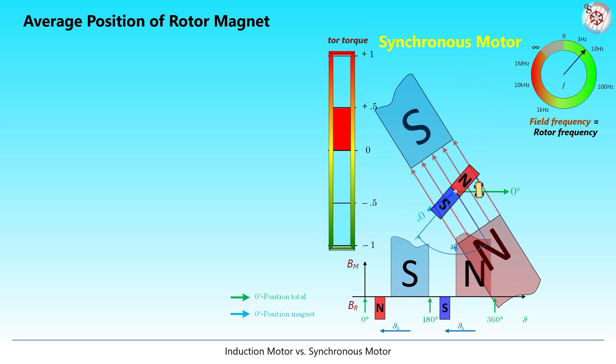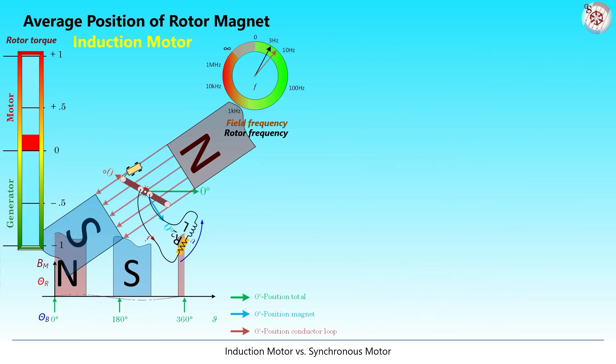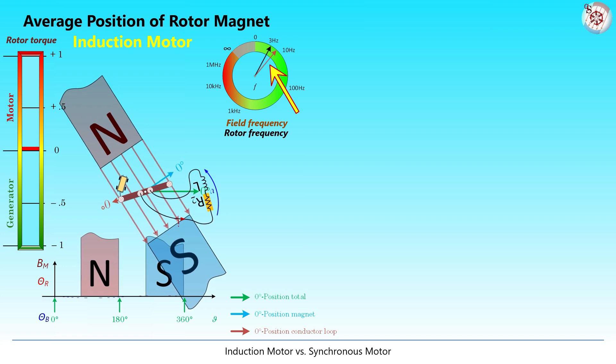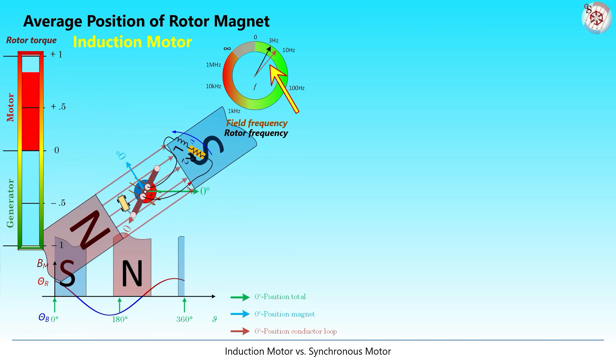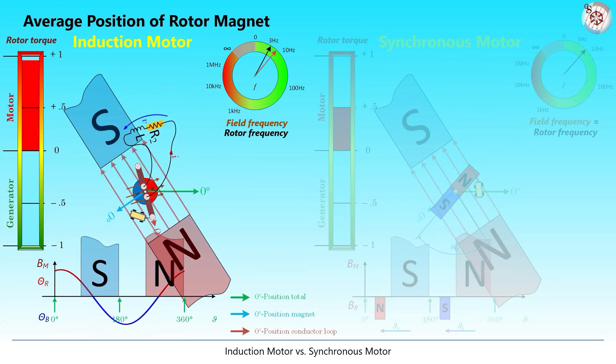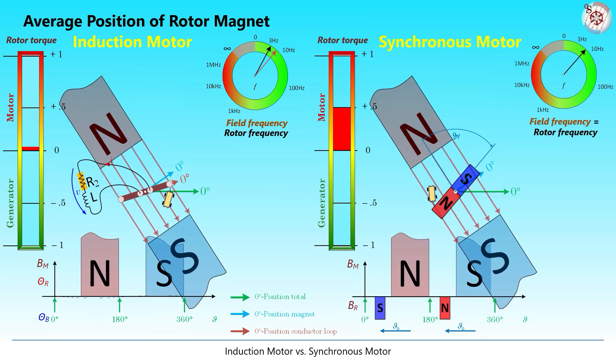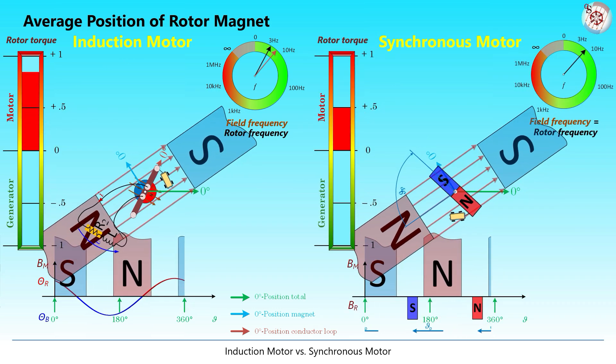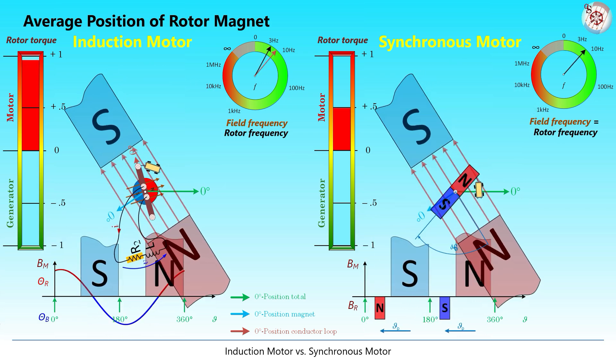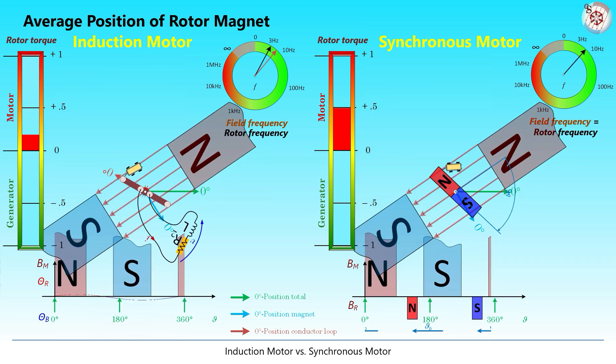If we compare that to an induction machine, the first obvious difference is that the rotor runs slower than the outer rotating field. This of course is necessary. The slower rotation allows a change of magnetic field in the short circuit loop and consequently the induction of voltage as shown earlier.